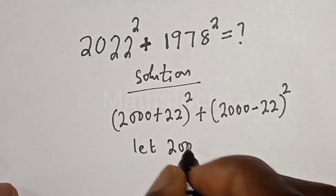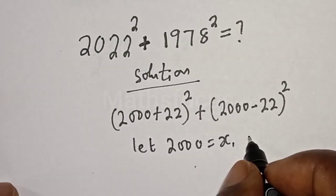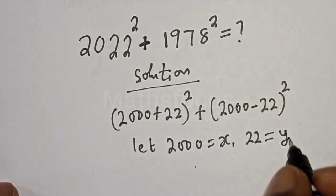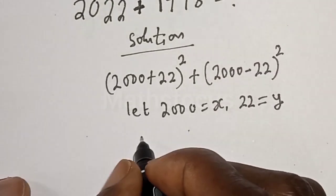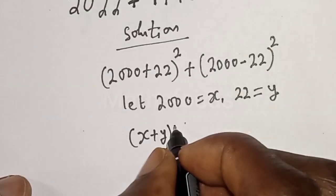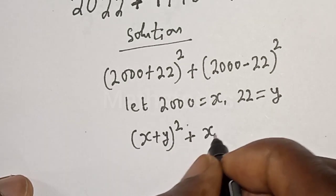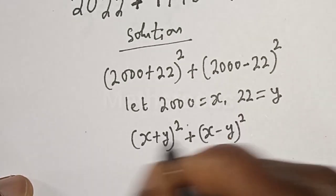Now let 2000 equal x and 22 equal y. So this is (x + y)² plus (x - y)².